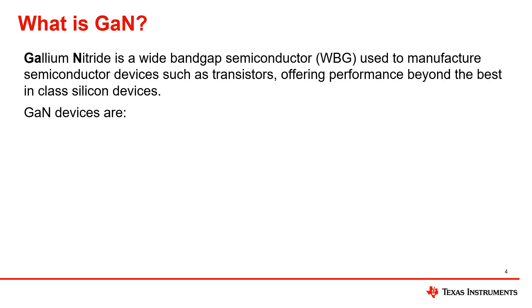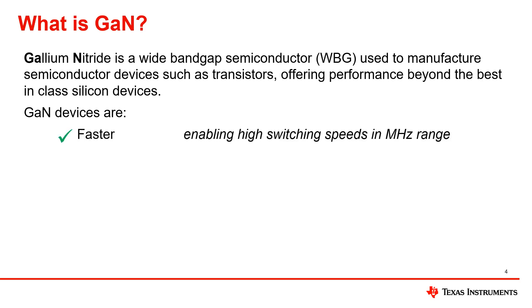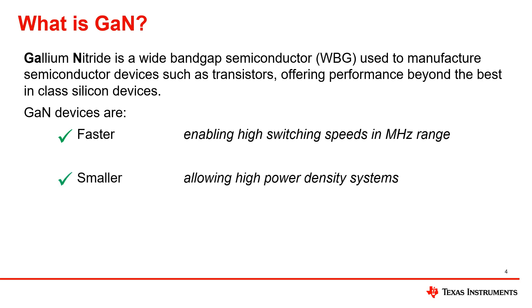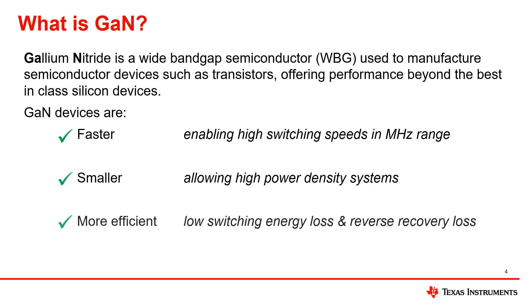Here is a quick overview of gallium nitride technology, which is also known as GaN. GaN is a wide bandgap semiconductor used to manufacture devices such as transistors, which offers performance beyond the best-in-class silicon devices. When compared to silicon devices, GaN devices tend to be faster, enabling higher switching speeds in the megahertz range. They are smaller, allowing for high power density systems, and they are more efficient since they have low switching energy losses and low reverse recovery losses.